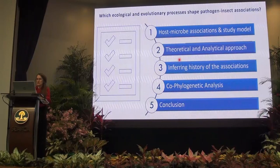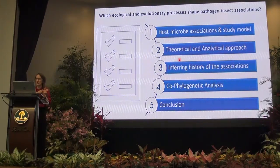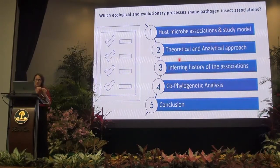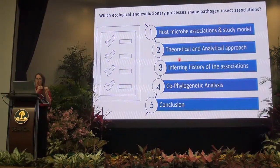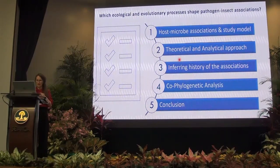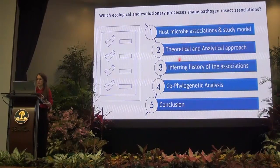A current question for ecology and evolutionary biologists is which ecological and evolutionary hypotheses shape microbe-insect associations, as well as pathogen-insect associations. Today I'm going to drive through a little bit of background about microbe-insect associations, my study model, the theoretical and analytical approach that we use to infer the history of associations, some results on cophylogenetic analysis, and conclusions.